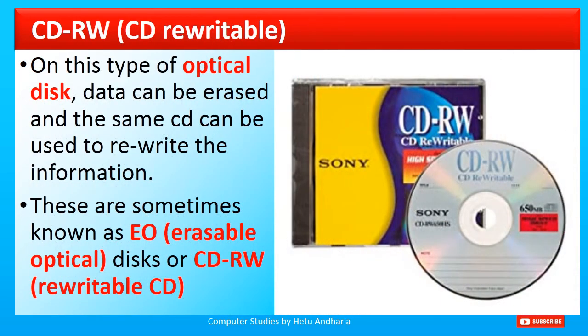The last type of CD is CD-Rewritable, which is costlier than the previous types. With this type of optical disk, data can be erased and the same CD can be used to rewrite data — you can compare it with a pen drive, though here you cannot erase a specific file; you can only format the entire CD. These are sometimes known as EO (Erasable Optical Disc) or CD-RW (Rewritable CD).